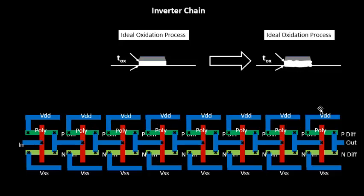This variation exists across all your transistors. Middle transistors accompanied by neighboring inverters will see less variation, whereas transistors or gates sitting at the edges will show much more variation as they are exposed to other structures as well.